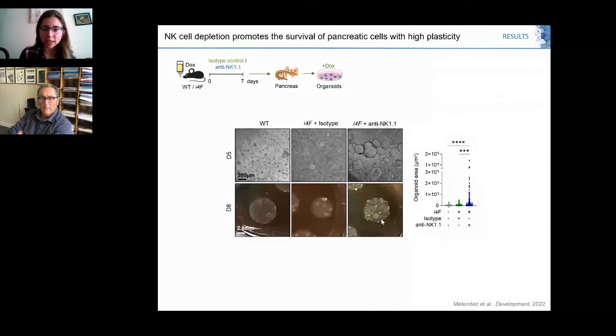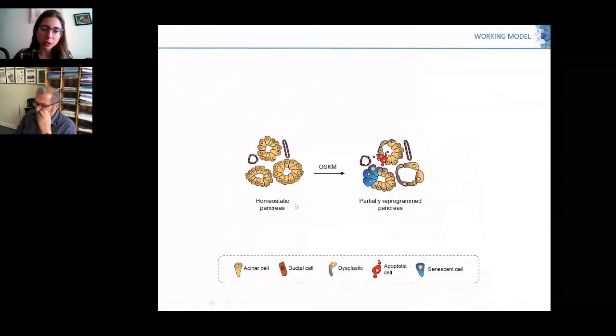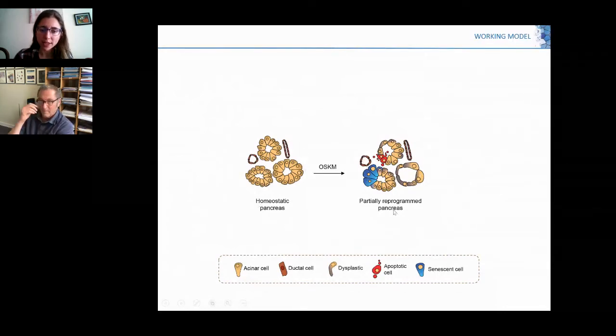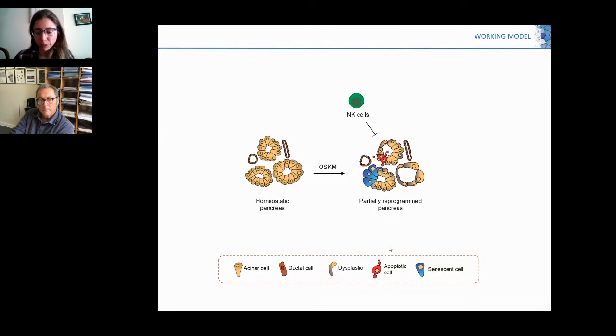With that, I'd like to present our working model. Upon OSKM expression in a homeostatic pancreas, the pancreas undergoes partial reprogramming. Apart from formation of these plastic cells, we can also observe apoptotic cells and senescent cells during reprogramming. What I've told you is that NK cells infiltrate the pancreas and limit the efficiency of the partial reprogramming process.